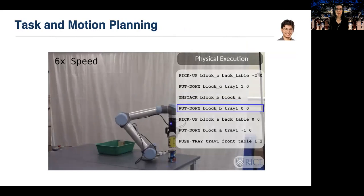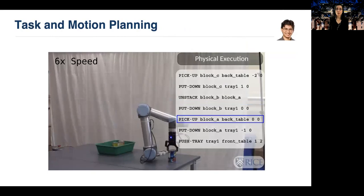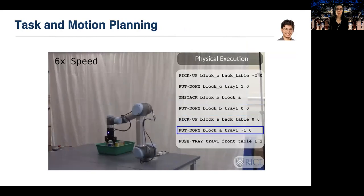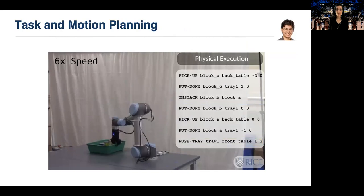And here is an example of a task and motion planning problem that we can solve automatically. The robot picks up all cans, places them in a bin, and pushes the bin forward. This is work by Wil Dantam, who actually provided the first probabilistically complete solution for task and motion planning problems using probabilistically complete planners from the OMPL library.